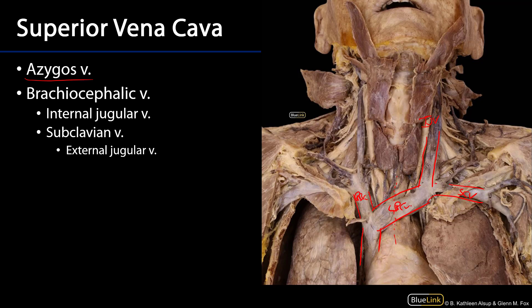The subclavian vein is returning blood from the upper limb as well as the head, neck, and thorax, and it receives an external jugular vein. The external jugular vein rides over the sternocleidomastoid muscle and is a sometimes visible vein on the superficial portion of the lateral neck. You can see here the external jugular vein, or EJV, the sternocleidomastoid reflected away, the IJ, and the subclavian vein.